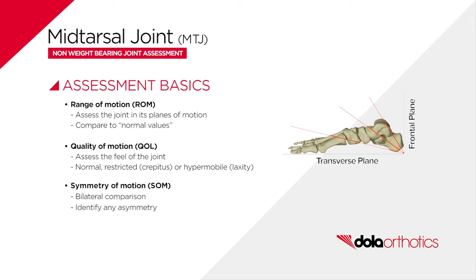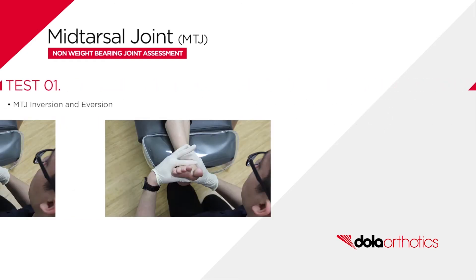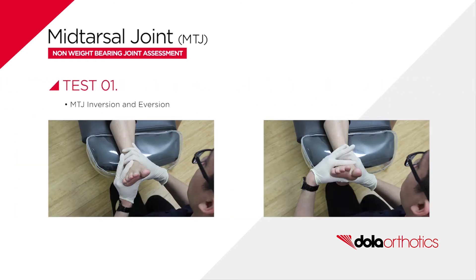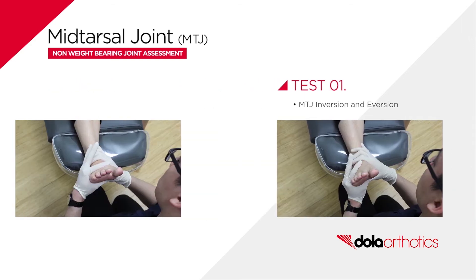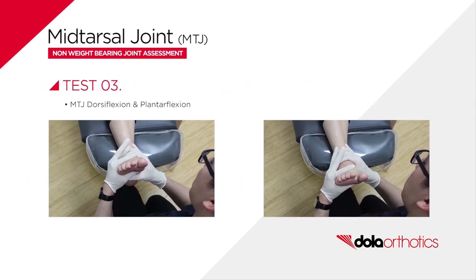Symmetry of motion assessment involves bilateral comparison to identify any asymmetry of function. The clinical test is usually performed with the patient supine, allowing good visualization of the movement and the subtalar joint position, as this influences the relative stiffness of the mid-tarsal joint. Non-weight bearing passive joint results are combined with active joint assessment and gait observations, as the mid-tarsal joint plays an important role from adaptation to loading to propulsion.